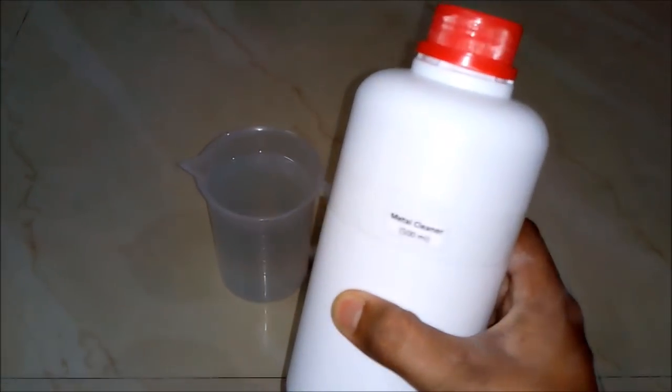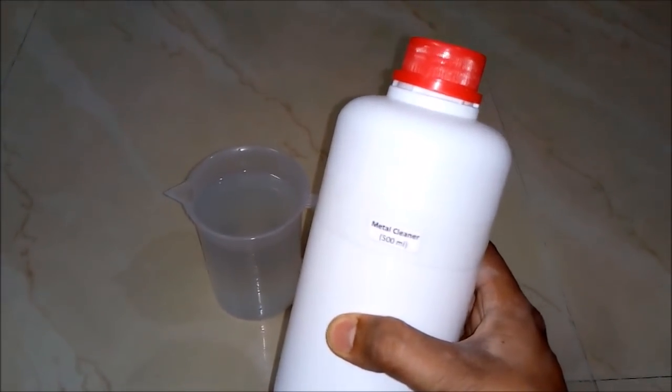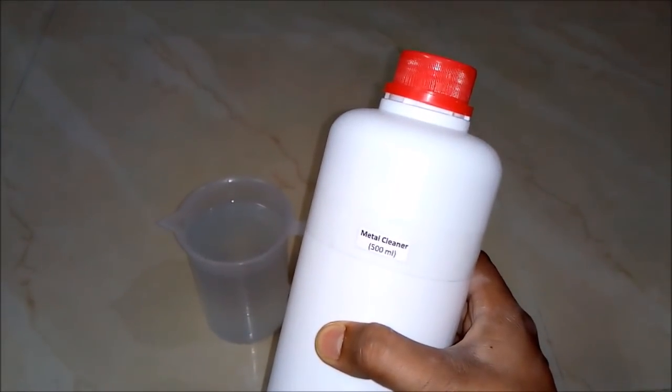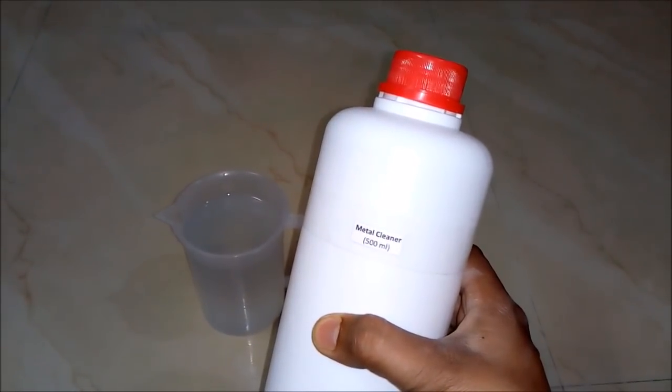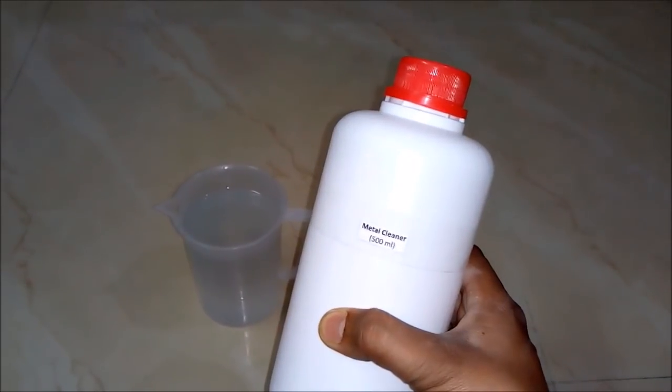And we can pack in this kind of a bottle. And it's ready to be used and to be sold in the market. And it's a very effective product. So friends now you come to know how it's so simple to prepare a metal cleaner and what is the formula behind it. In this way you can prepare metal cleaner at home and for business purpose also.